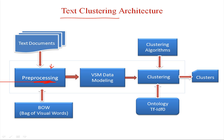The next step is data representation — how to represent the data after preprocessing. The data can be represented in the form of bag of words, identified phrases, bigrams, trigrams, etc. Then we apply a data model such as the vector space model to represent the data. After that we apply clustering algorithms, and we can also apply measures like TF-IDF or ontology-based measures with clustering to improve the results and produce the final set of clusters.